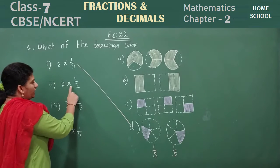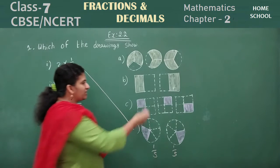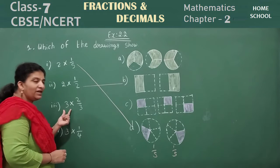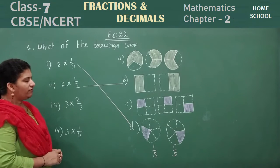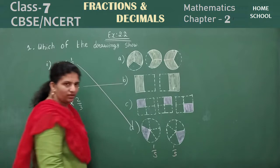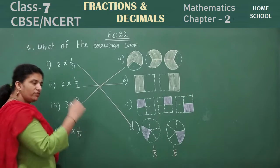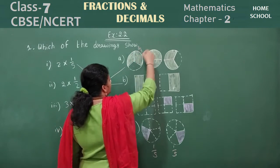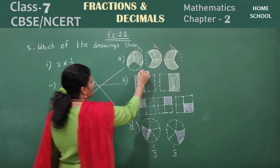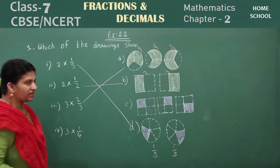Next, for 2 into 1 by 2 — where do you have 2 figures each having a fraction of 1 by 2? There you go, match that one. For 3 into 2 by 3 — where do you have 3 figures with ratio 2 by 3? There are 3 circles each having a fraction of 2 by 3, so 3 into 2 by 3. And 2 into 1 by 2 matches the two figures of 1 by 2.